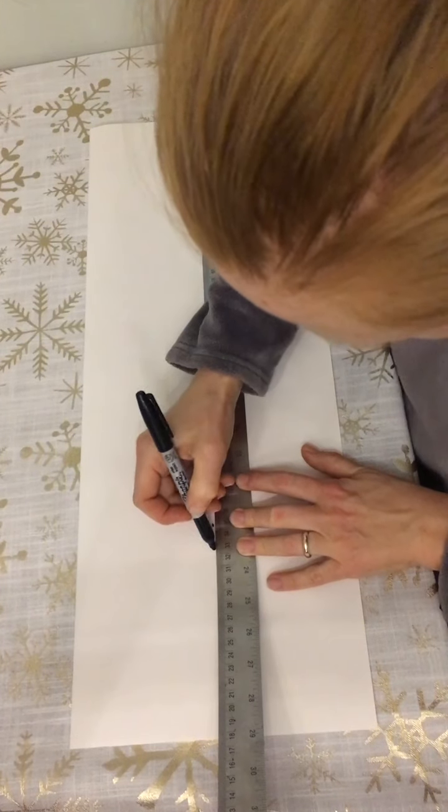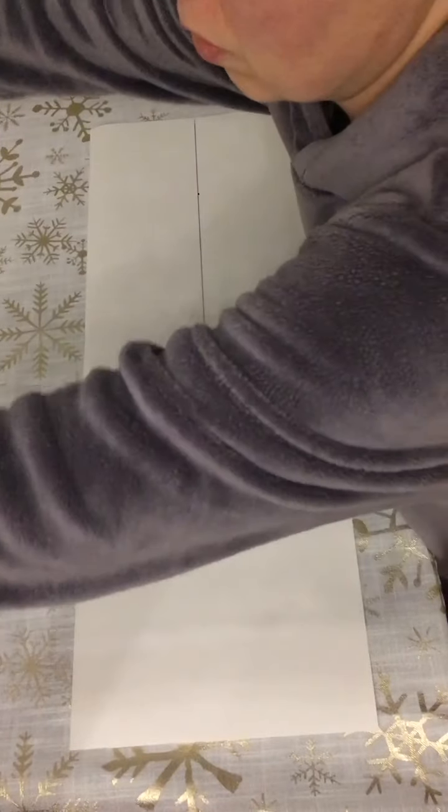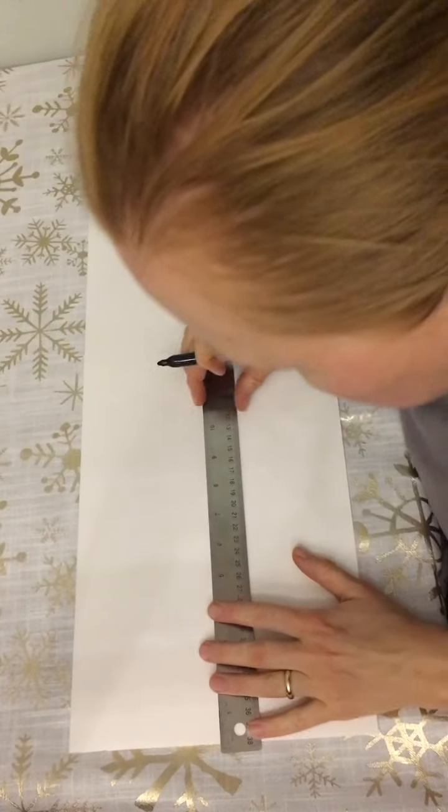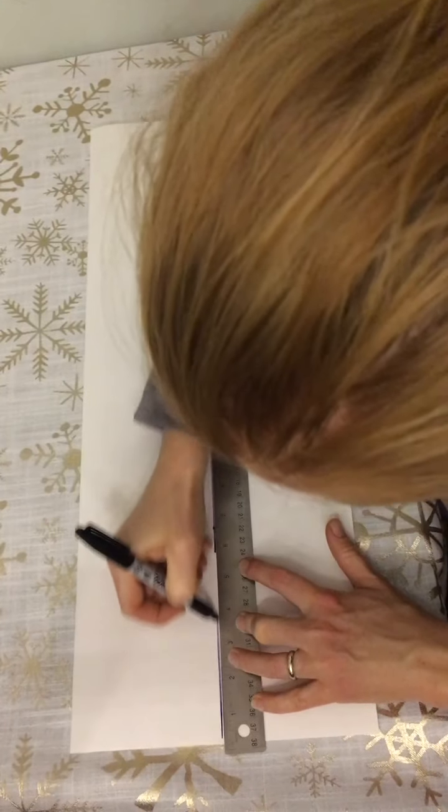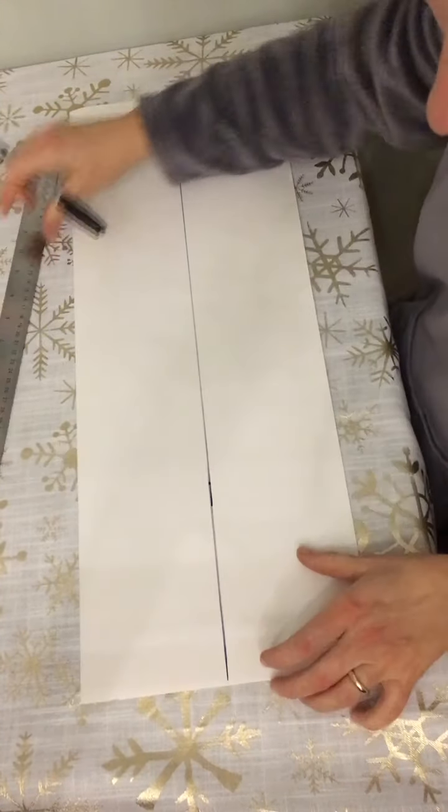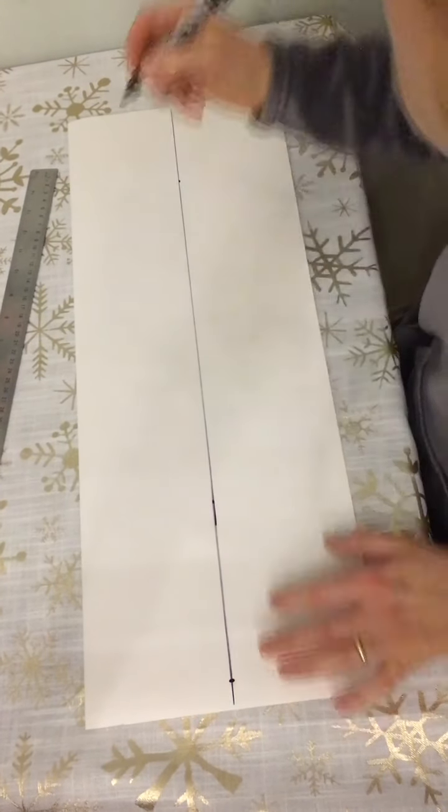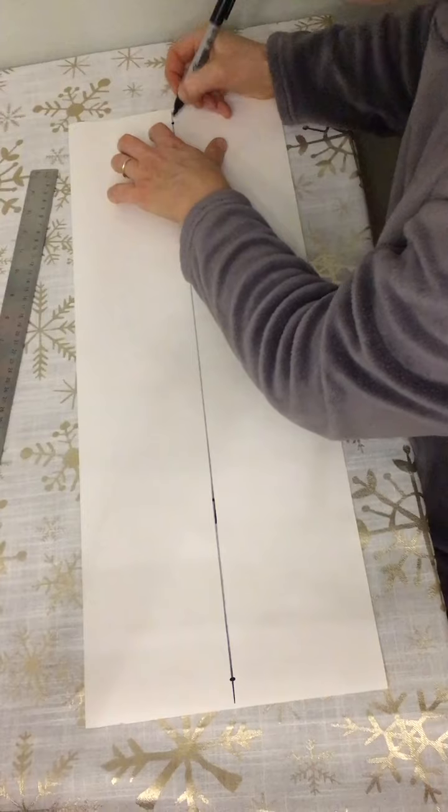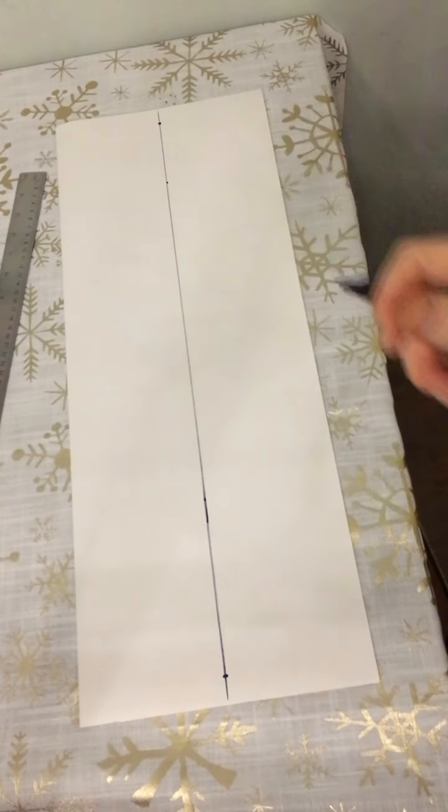This ruler is so long it doesn't fit on this table. Next thing you have to do is make your vanishing points about an inch or a half an inch from the edge.